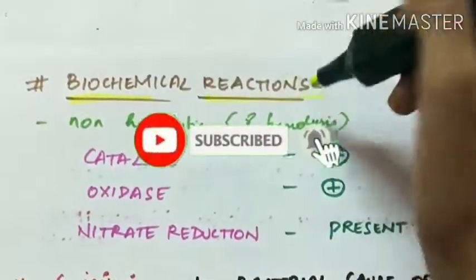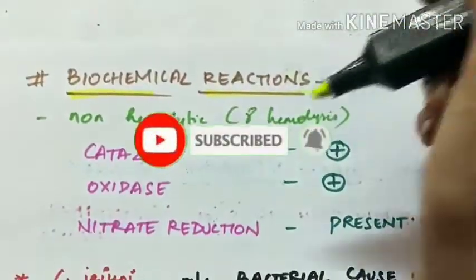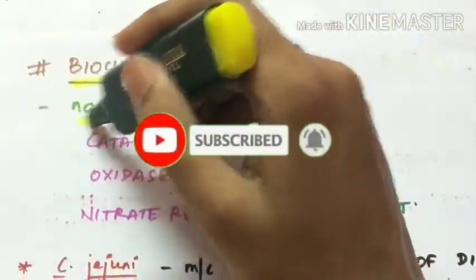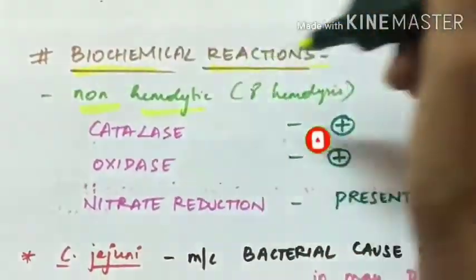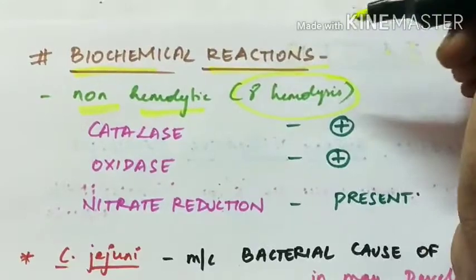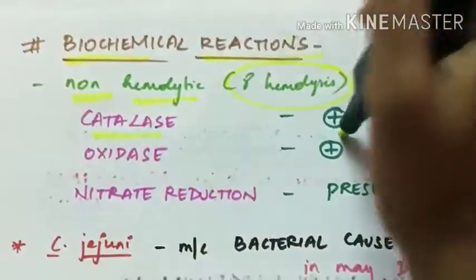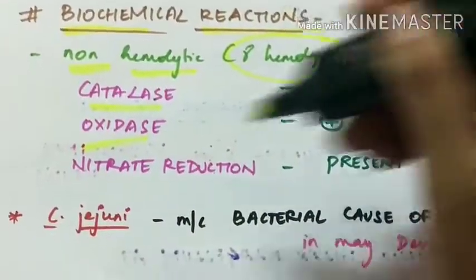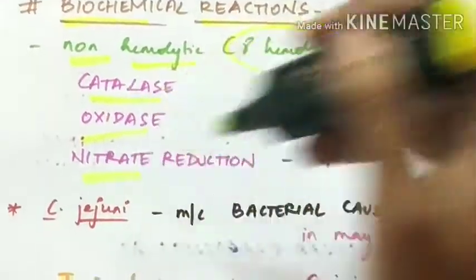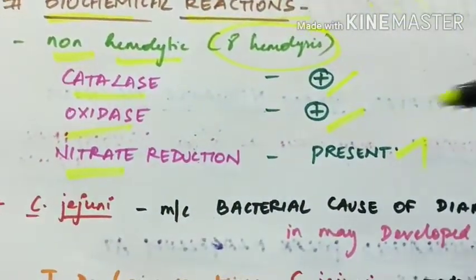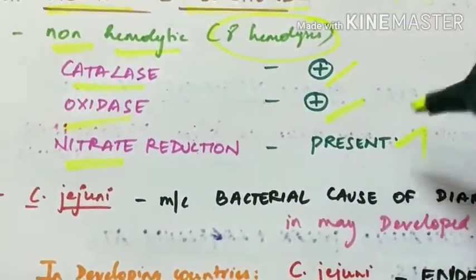Regarding biochemical reactions, Campylobacter is non-hemolytic, showing gamma hemolysis. It is catalase positive and oxidase positive, and nitrates are reduced to nitrites, so nitrate reduction is present.